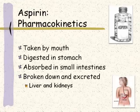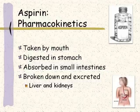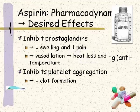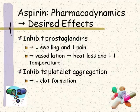Pharmacokinetics of aspirin: this drug is taken by mouth, digested in the stomach, and absorbed in the small intestines. It's then broken down and excreted through the liver and kidneys. Pharmacodynamics: we give this for pain relief — it will cause analgesia. It's going to reduce fever — that's called an antipyretic effect. It's used to prevent and bring down swelling — that's anti-inflammatory action. And it's an anticoagulant, which will help prevent clots. Pharmacodynamics are closely tied to desired effects: aspirin inhibits prostaglandins, leading to decreased swelling and pain.